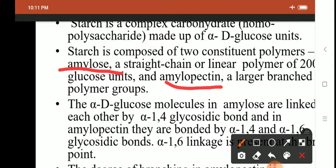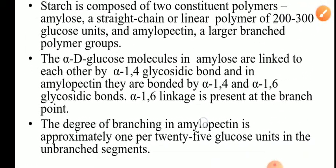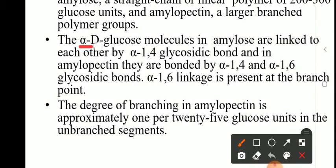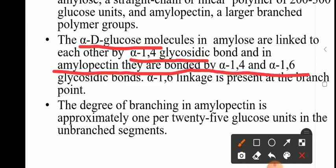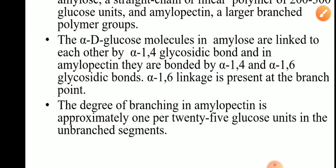What is the difference? Amylose is a linear polymer; amylopectin is a branched polymer. In amylose, alpha-D glucose units are joined to each other by alpha-1,4 glycosidic bond. In amylopectin there are two types of linkages: alpha-1,4, by which one glucose molecule is joined to another, and also alpha-1,6 glycosidic bond. Alpha-1,6 glycosidic bond is present at the branching point wherever there is branching. The degree of branching in amylopectin is approximately 1 per 25 to 30 glucose units.